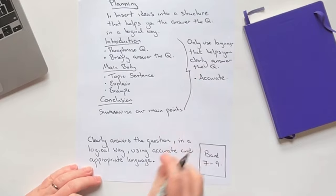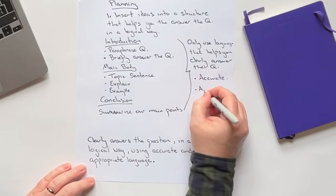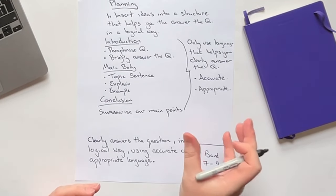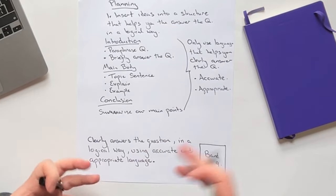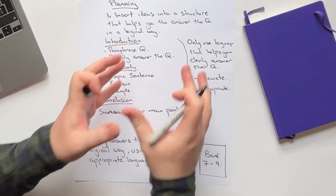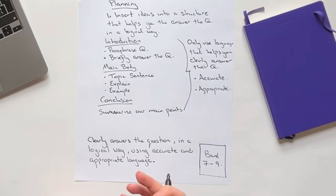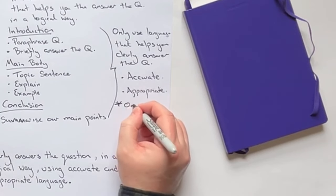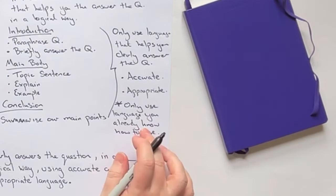And your language should be accurate. So as few mistakes as possible, it should be appropriate. Are you using topic specific language to answer the question that helps you clearly convey your message to the examiner? Or are you just memorizing a bunch of high level words and shoving them into your essay? That will make your essay less clear.